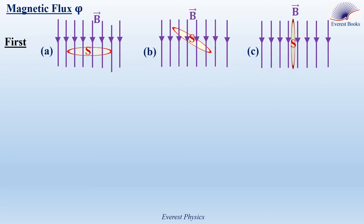In figures A, B, and C, a wire loop is placed in a magnetic field B having parallel field lines. In figure A, the field lines are normal to the surface, so the magnetic flux crossing this loop is phi 1. In figure B, we incline the loop, but we care about the component of B normal to the surface, so the flux is phi 2, which is less than phi 1. In figure C, the field lines go along the surface and not through it, so the magnetic flux phi 3 equals zero.